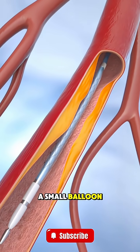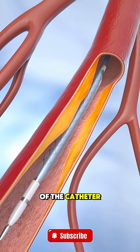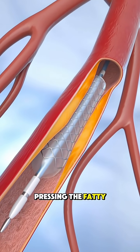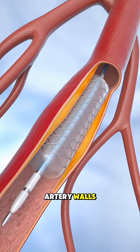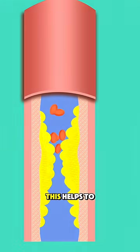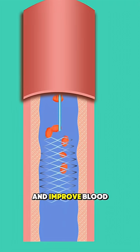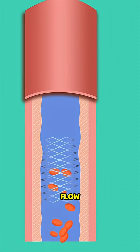Once in place, a small balloon at the tip of the catheter is inflated, pressing the fatty plaque against the artery walls. This helps to widen the artery and improve blood flow.